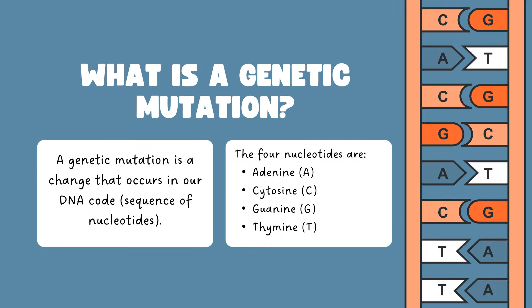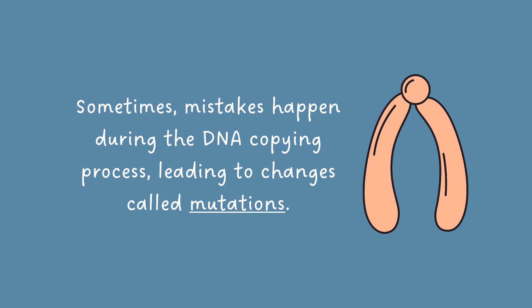What is a genetic mutation? A genetic mutation is a change that occurs in our DNA code or sequence of nucleotides. The four nucleotides are adenine, cytosine, guanine, and thymine. Sometimes mistakes happen during the DNA copying process, just like how we make mistakes while writing, leading to a change called mutation.